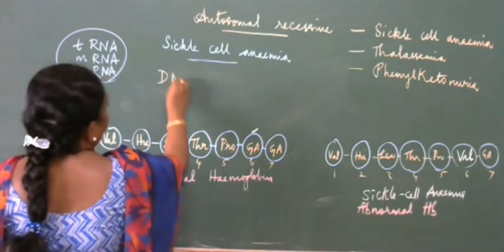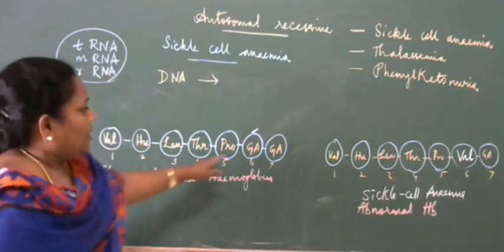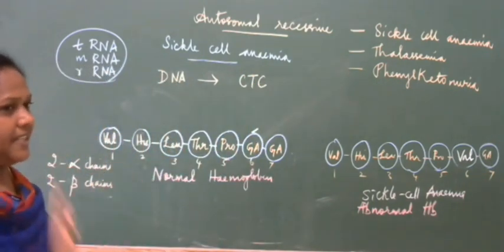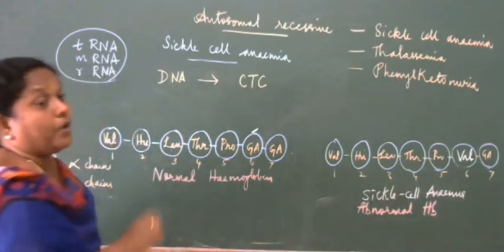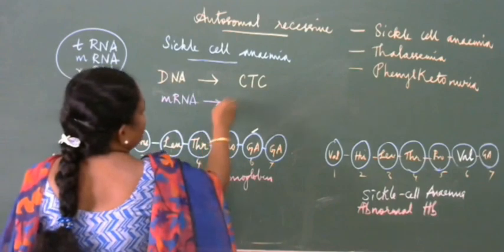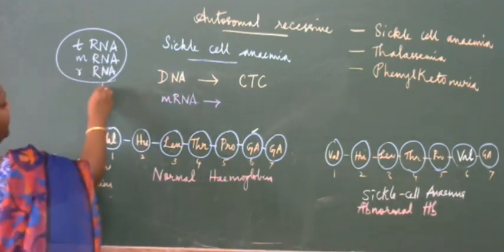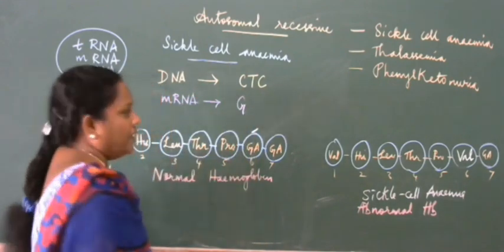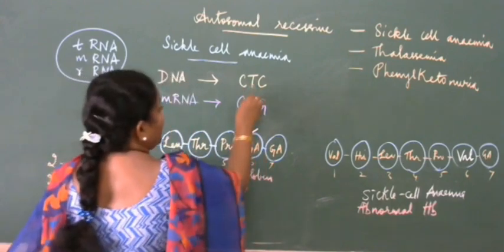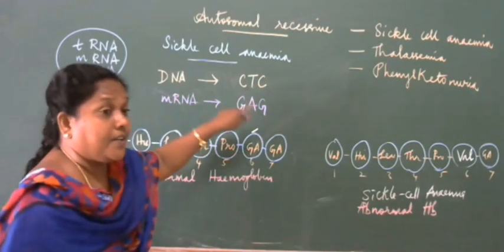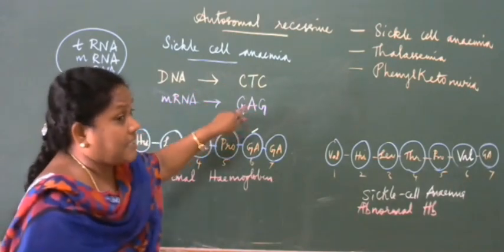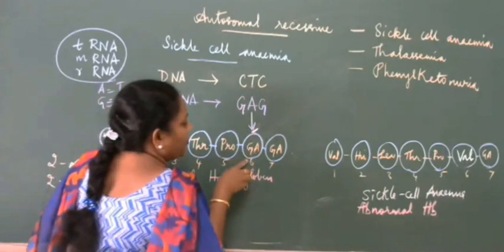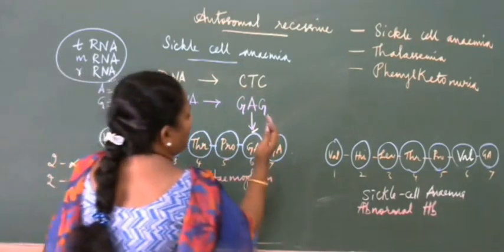In the DNA, the normal gene codon responsible for producing glutamic acid is CTC. When this is transcribed to mRNA: cytosine pairs with guanine (G), thymine pairs with adenine (A), and cytosine pairs with guanine (G) — so the mRNA codon GAG codes for glutamic acid.